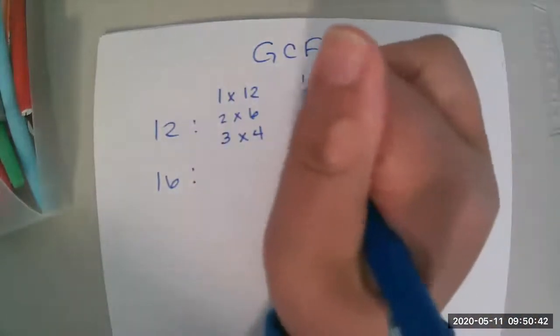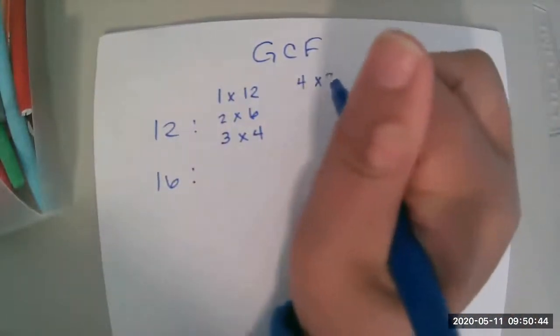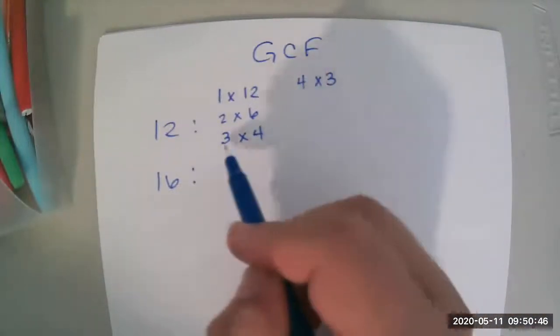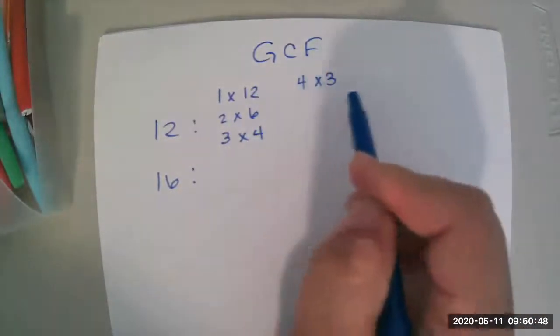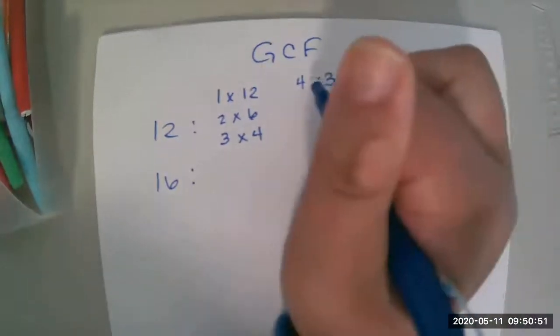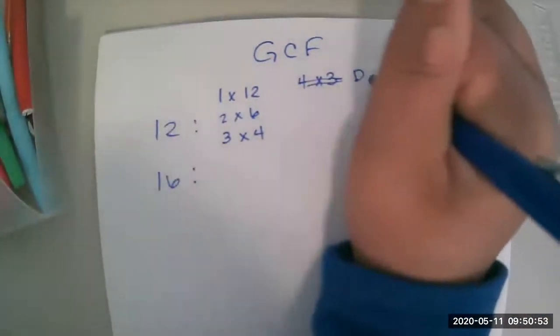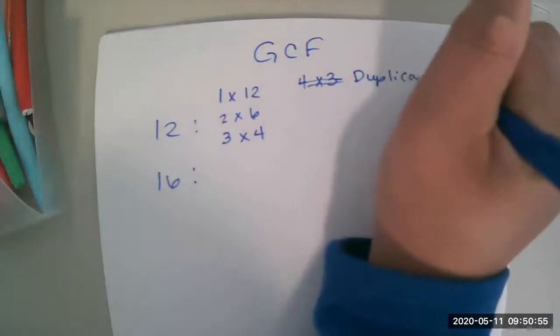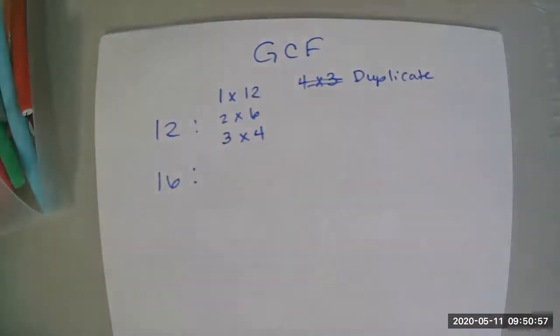Okay, next is 4. Well, 4 times 3. Well, we already listed 3 times 4, which is 12, and 4 times 3 is 12. These are essentially the same things. So this would be considered our duplicate. And whenever you get a duplicate, you're done. You've listed all the factors.